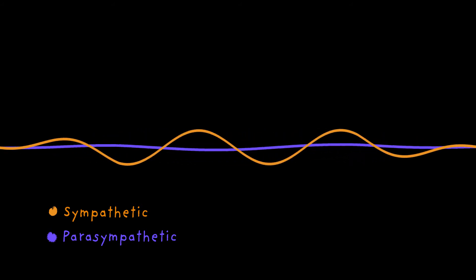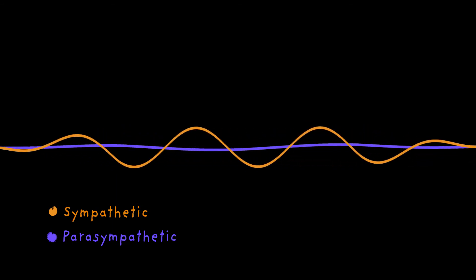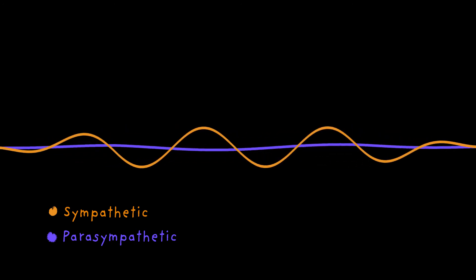When you encounter stress, the tone of your sympathetic system increases relative to the parasympathetic. This causes an automatic spike in physiologic activity. Your heart rate rapidly climbs and your breathing becomes shallow and fast.